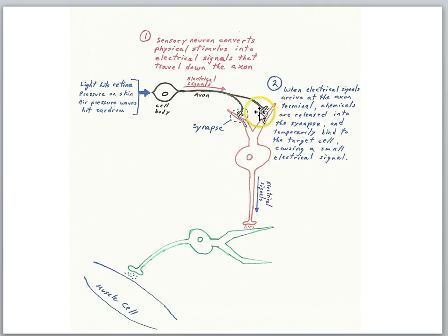Okay, so now we're at the synapse here. The electrical signals whether they're high frequency or low frequency have raced down to the terminal and now chemicals get released. Again we'll study this in more detail later in the course. But when the electrical signals arrive at the axon terminal, chemicals are released into the synapse and temporarily bind to the target cell causing a small electrical signal to be generated in the target cell. So we have electrical signal and then a chemical release and then another electrical signal. This is how brain cells operate.